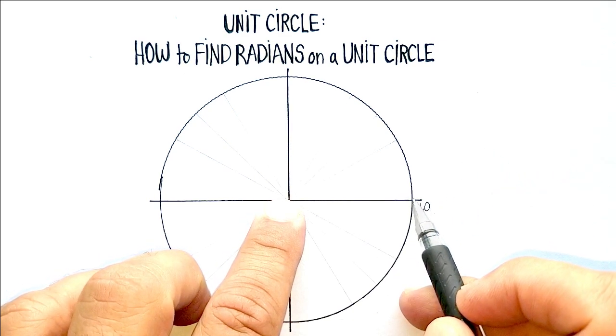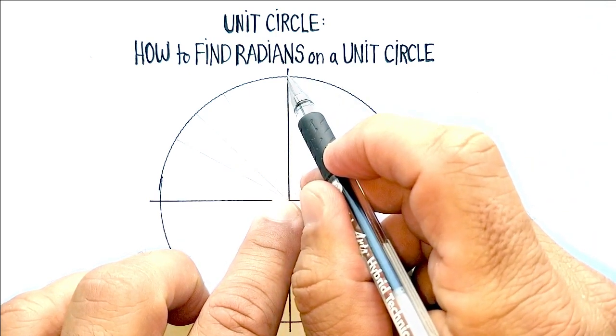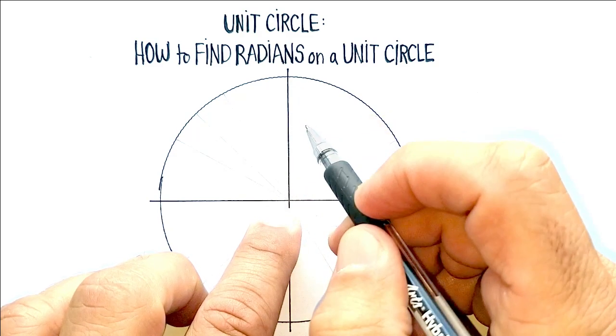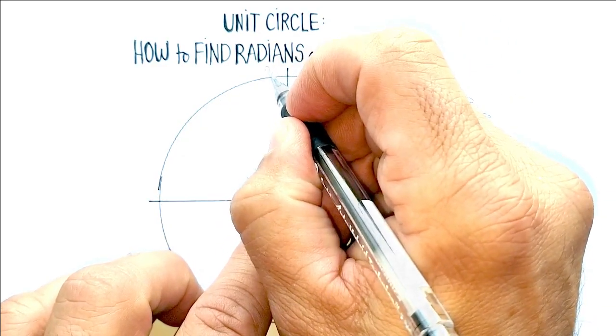And again, if we use the same radius of 1 all the way up to here, that means that the coordinate there would be 0, positive 1. Let's just write that in there: 0, 1.